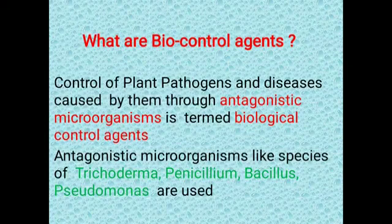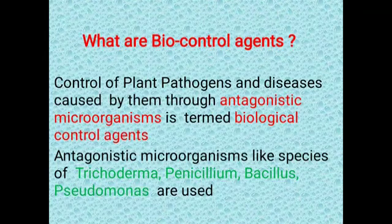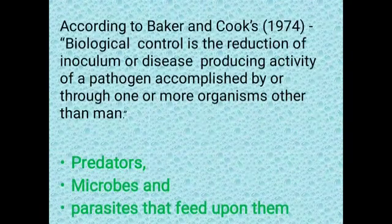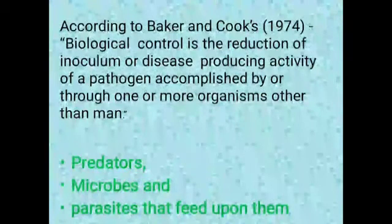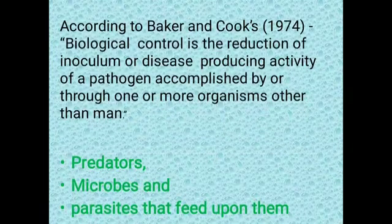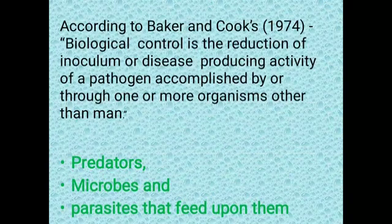Let us see the definitions of biocontrol agents. Different definitions were given by different scientists. It is the control of plant pathogens and diseases caused by them through antagonistic microorganisms, termed as biological control agents. Another definition: it is the reduction of inoculum or disease-producing activity of a pathogen accomplished through one or more organisms other than man. Biocontrol agents include Trichoderma, Bacillus subtilis, Pseudomonas fluorescens, etc.